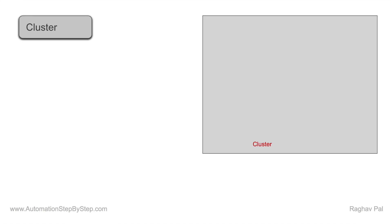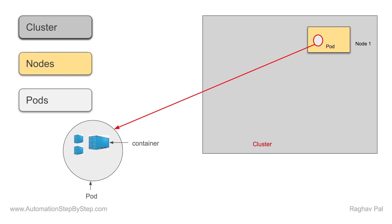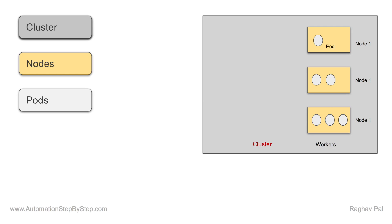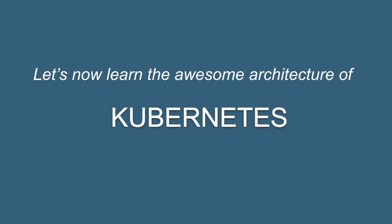Hello and welcome to this session. In the earlier session, we have seen a very high level basic architecture of Kubernetes. We know that when we set up Kubernetes, we get a cluster. A cluster has master and worker nodes. In a worker node, there can be one or more pods, and inside pods, there can be one or more containers. In a cluster, we can have multiple worker nodes and one or more master nodes, and the master controls or manages the workers.